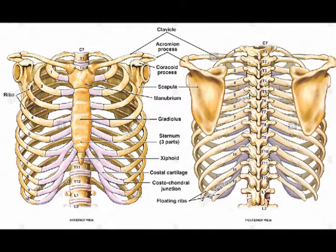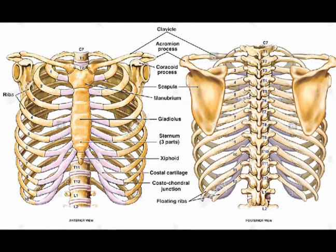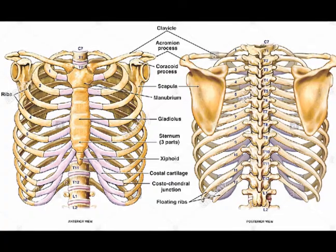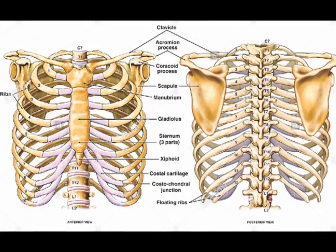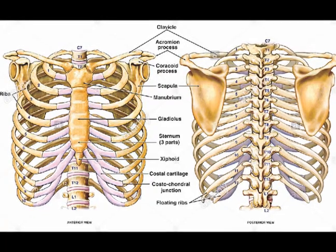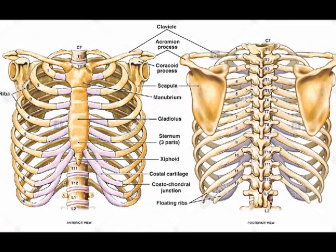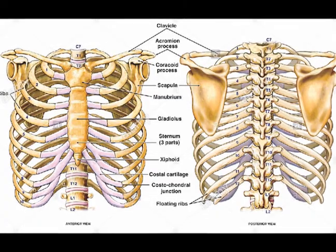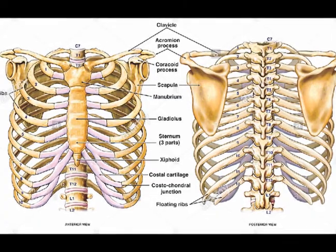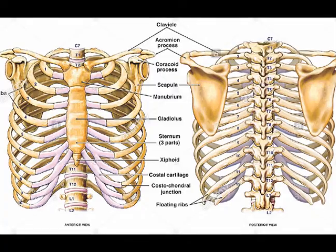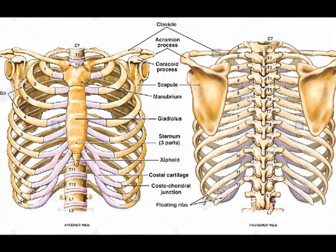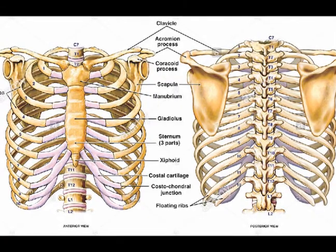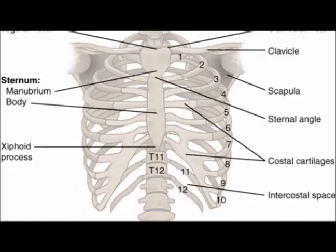The rib cage consists of the 12 thoracic vertebrae, T1 through T12 — all the vertebrae in the thoracic spine, which is the medical term for the mid-back. There are also 24 ribs in the rib cage, 12 on each side, and then the sternum and the costal cartilage that attaches the ribs to the sternum.